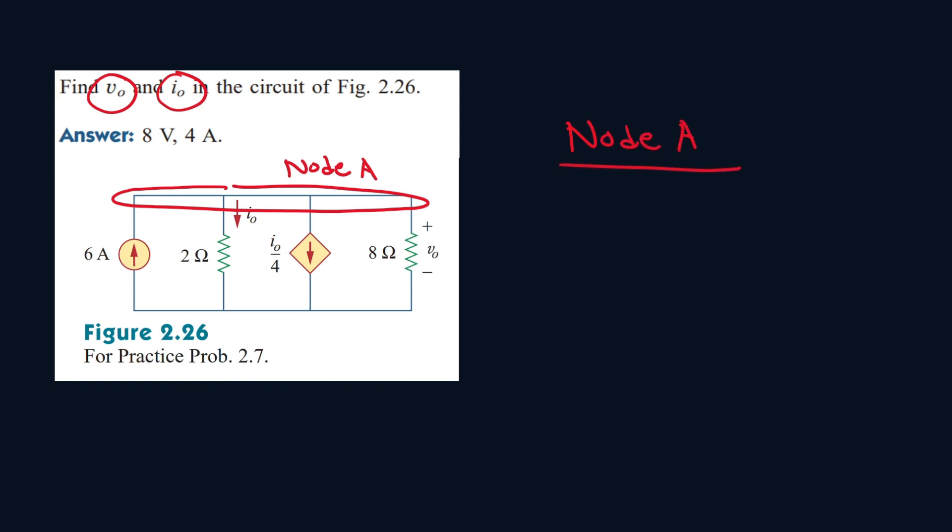Let's find an equation for node A. We see that there's 6 amps of current entering node A, so let's call this 6 amps. And we see that there's this much amount of current leaving node A, so this will be equal to I0. And we see there's also this much amount of current leaving the node as well, so this will be I0 over 4.